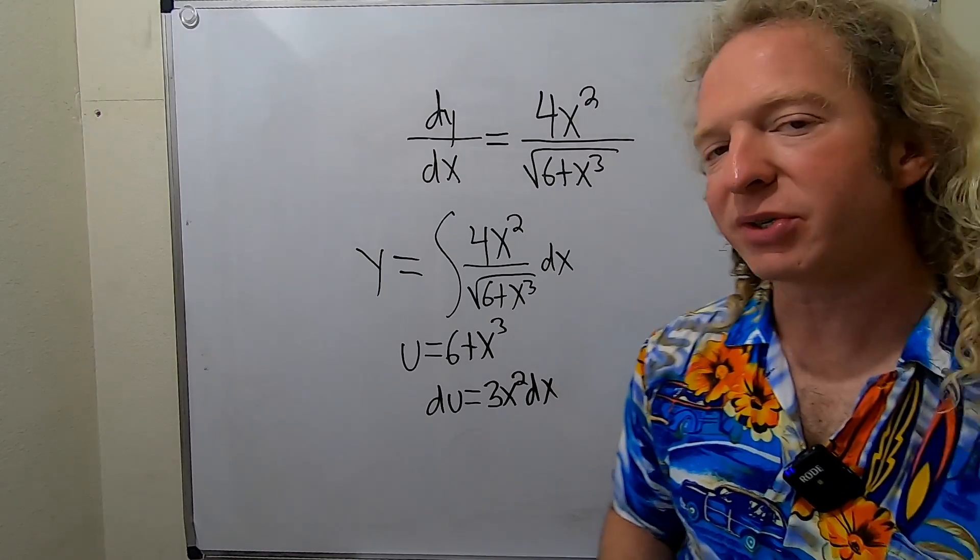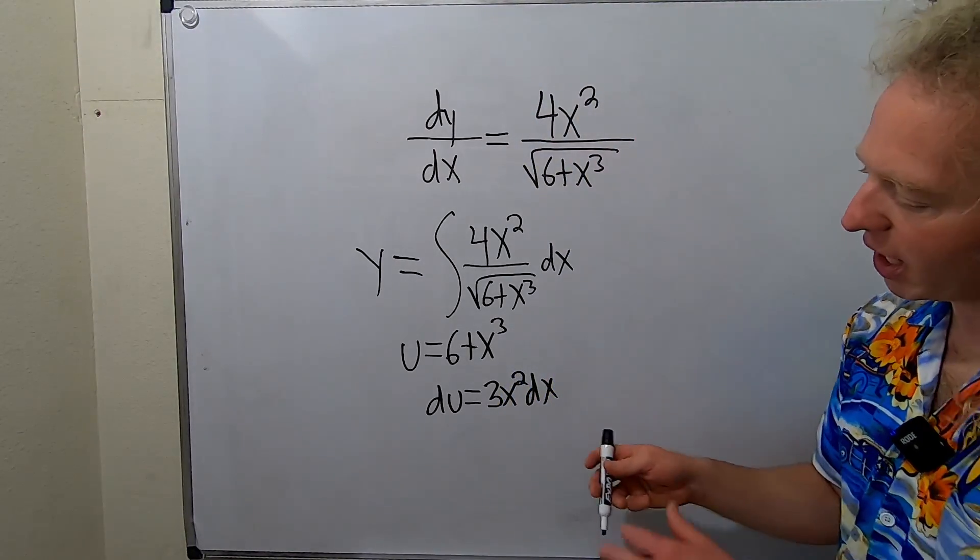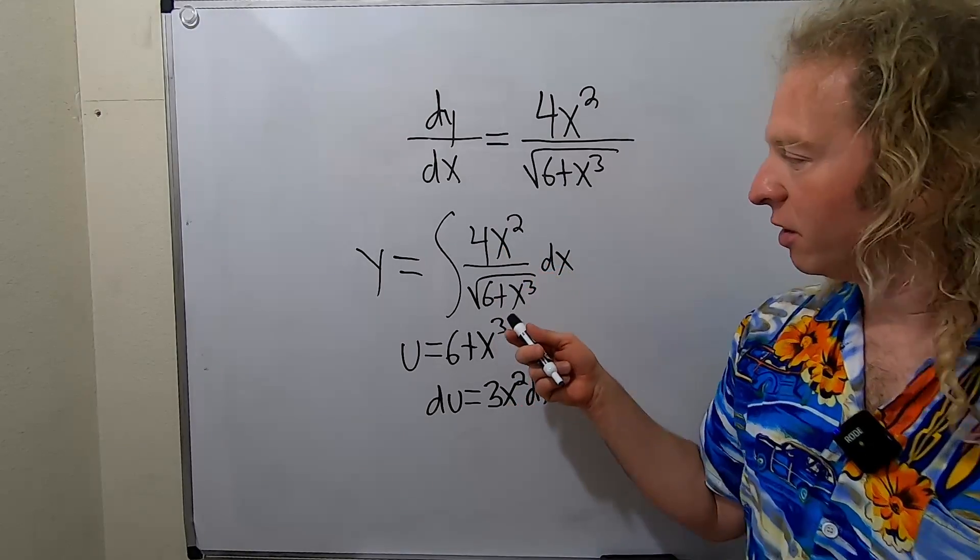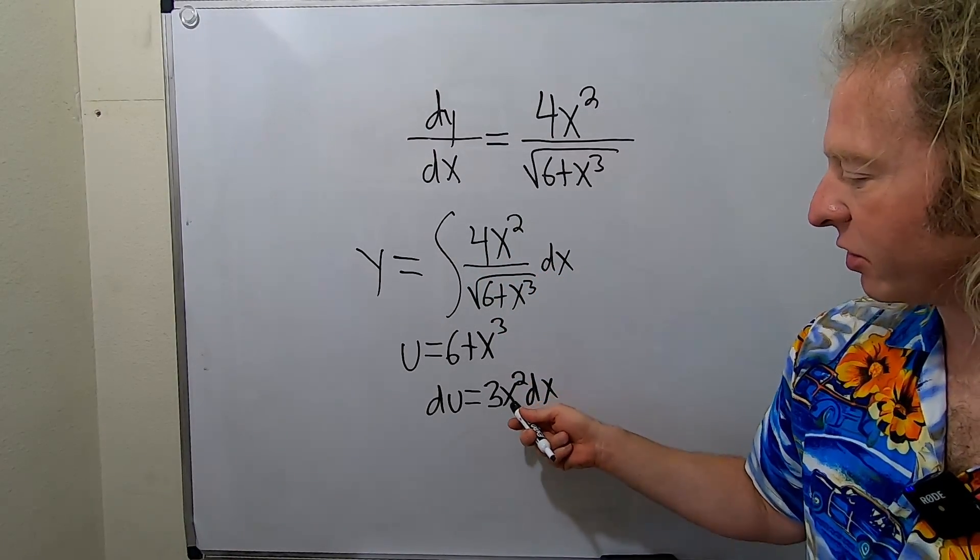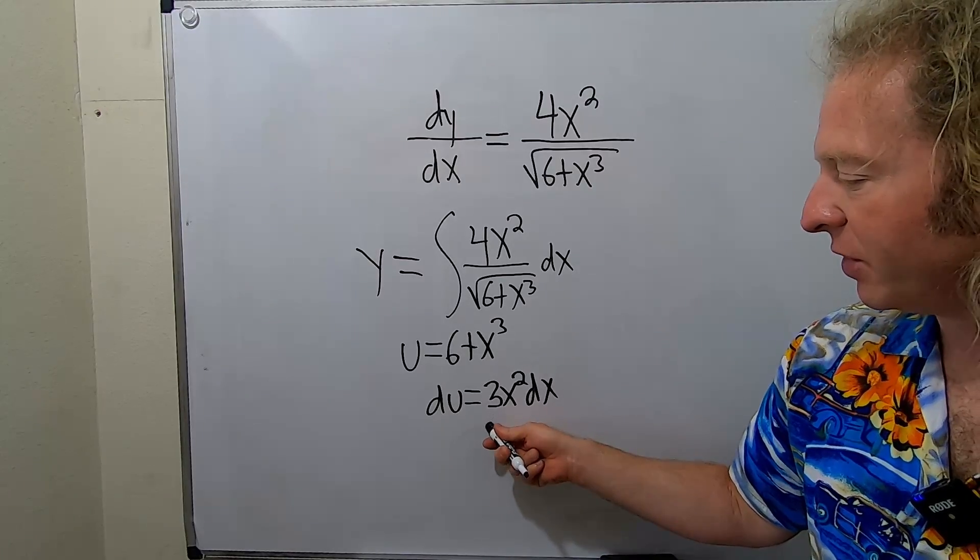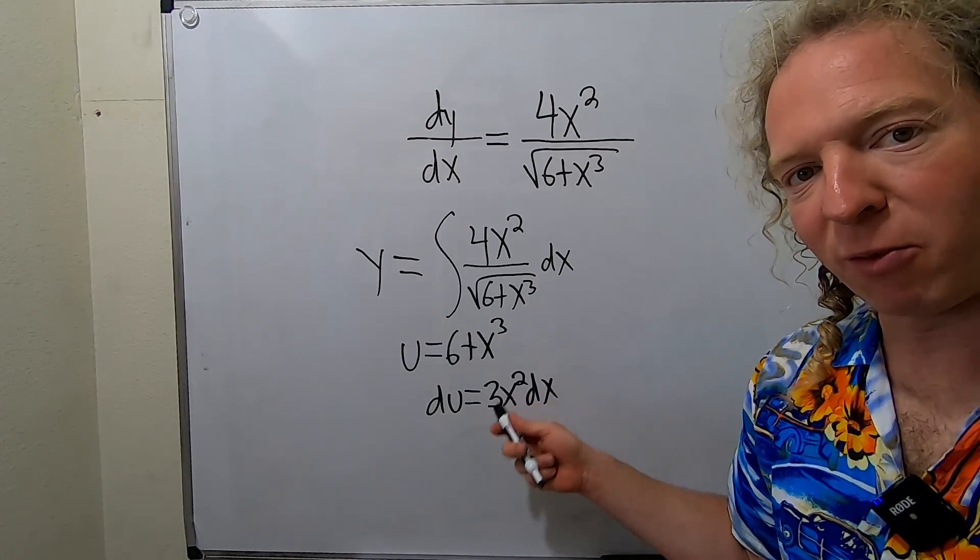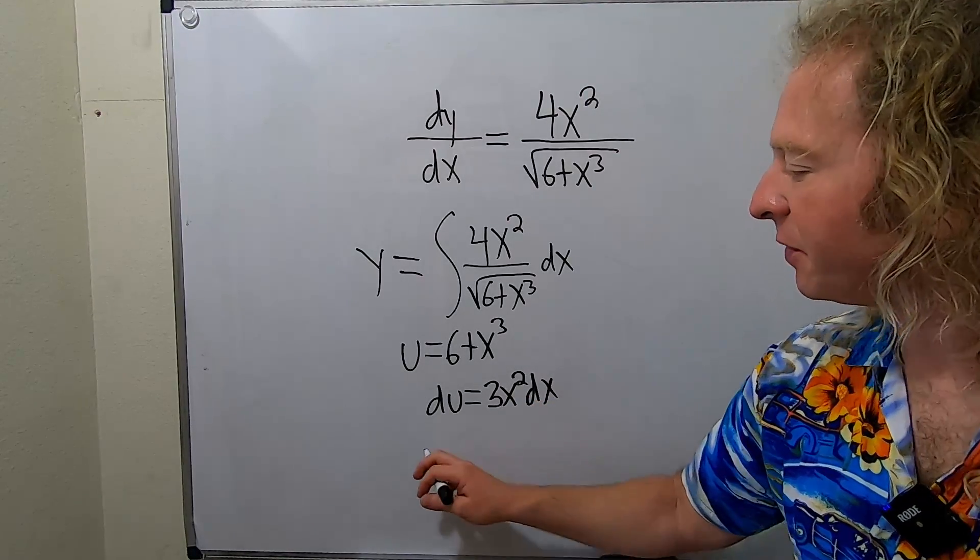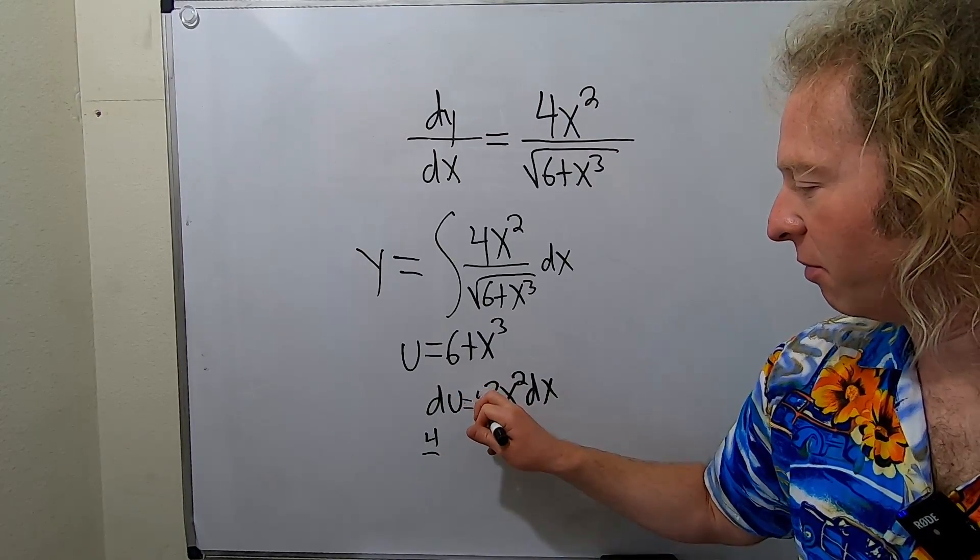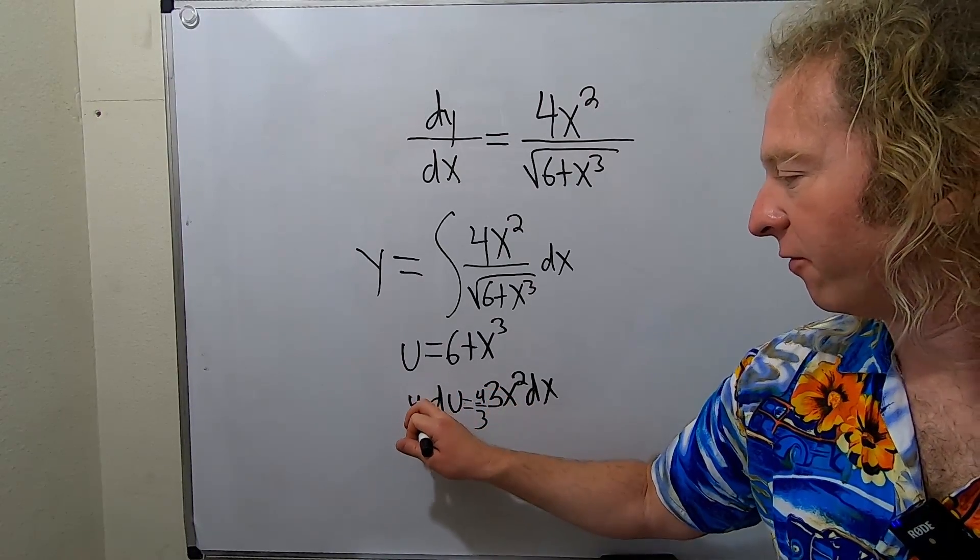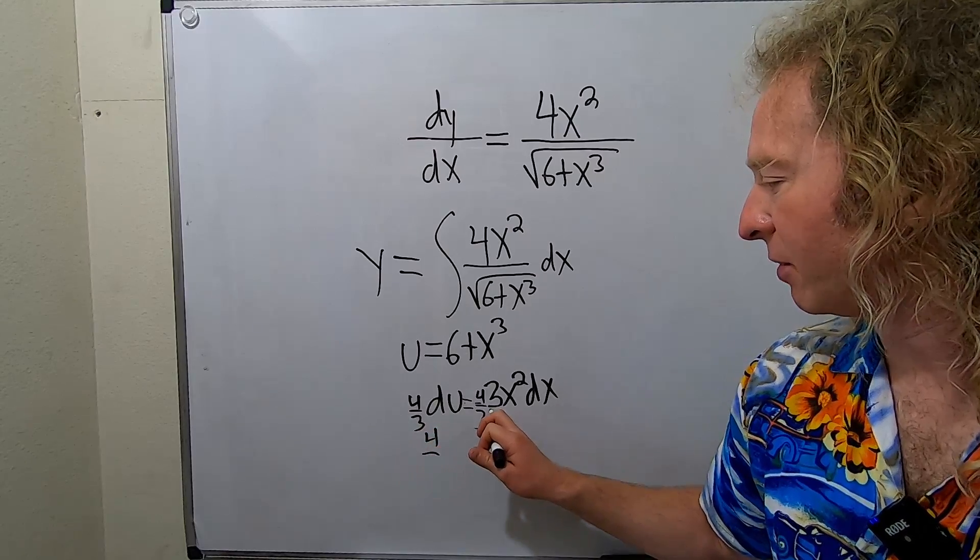And so now this is where the elegance occurs. We have to make this look like what's up here. So there's a 4x squared dx here. Here we have 3x squared dx. We want that to be a 4. So we can divide by 3 and multiply by 4 at the same time by multiplying by 4 thirds. In fact, I'm going to cheat and put a 4 over 3 here and a 4 over 3 here. And look what happens.